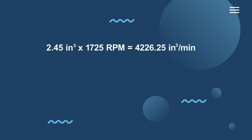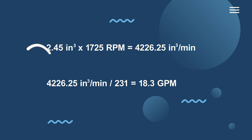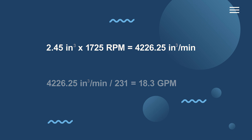This can be converted to gallons per minute by simply dividing the cubic inches per minute by 231, leaving us with 18.3 GPM. Now that you understand how to calculate pump flow, let's talk about efficiency.